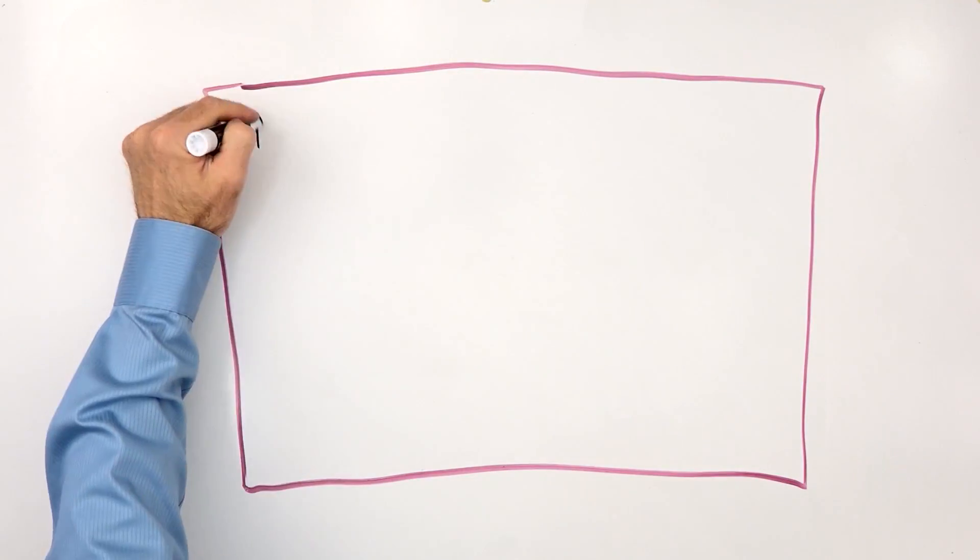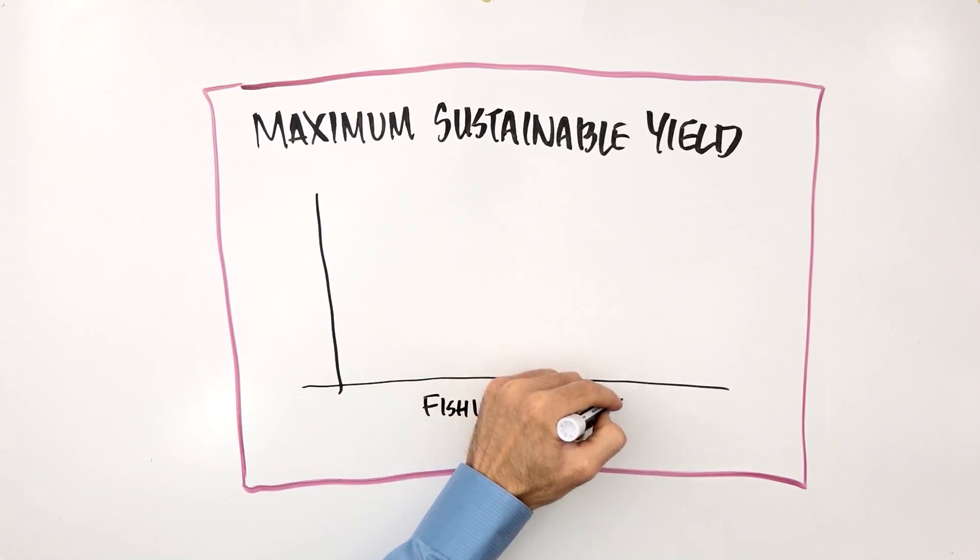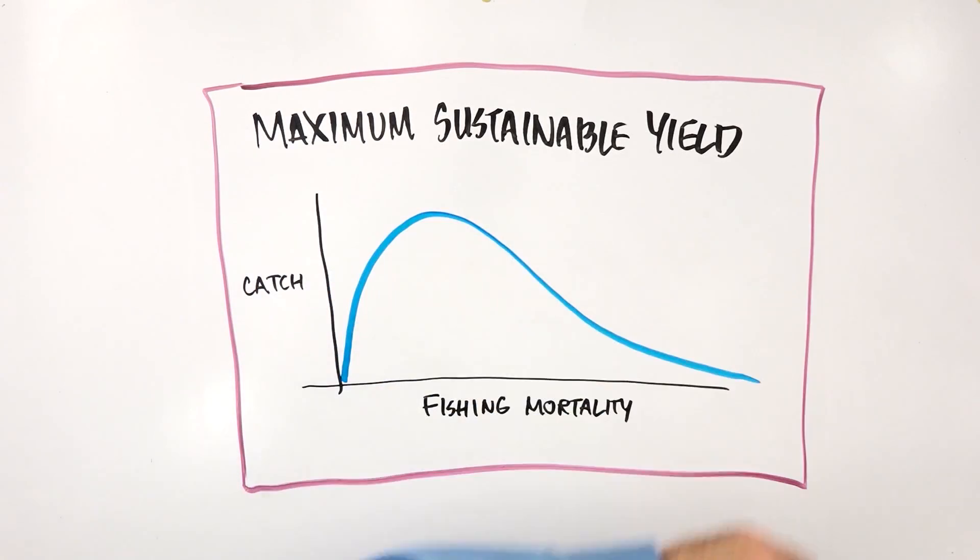But if EU decision makers limit fishing to the maximum sustainable yield, that's the highest level of catch that doesn't harm a fish stock, scientists say fish populations can rebound.